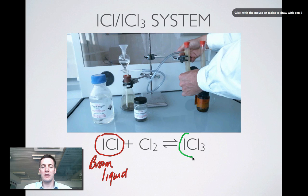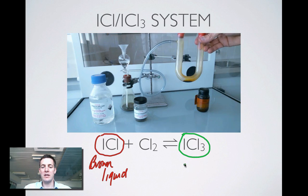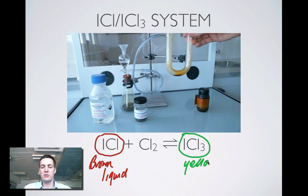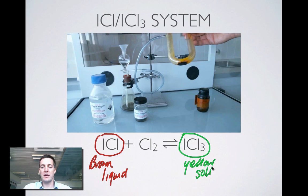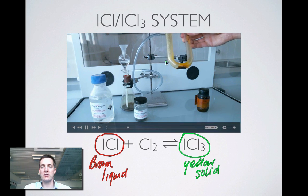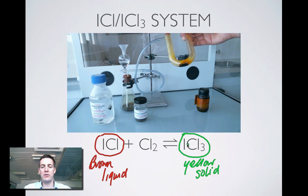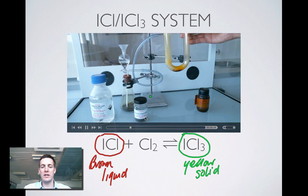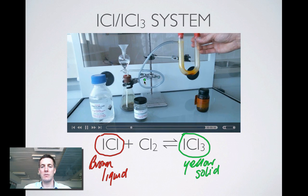How are we going to know if the ICL is turning into ICL3? Well, because we've got a yellow solid. So we're looking here at the tube, which has got a mixture of both things. It's got a yellow solid on the sides of the tube and a brown liquid down the bottom. So we've got both the reactants and the products. And we've got chlorine there as well because we've just made some in that flask.